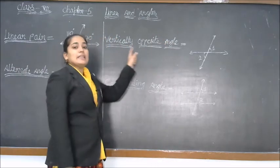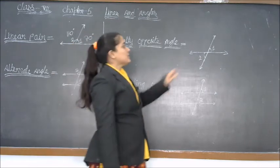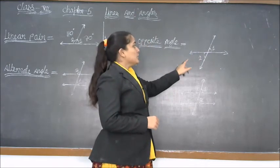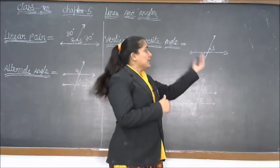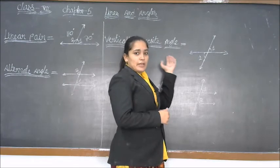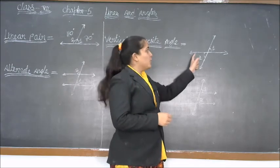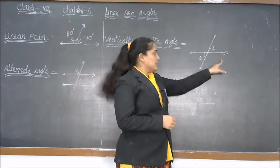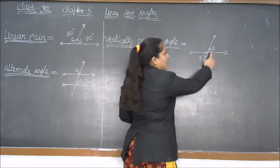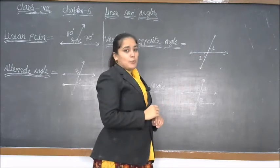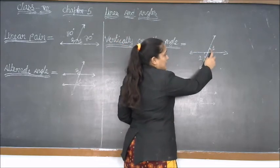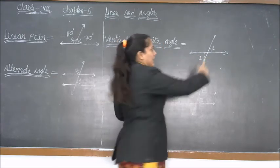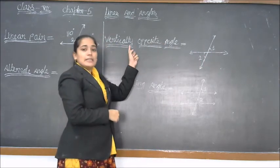Third is vertically opposite angle. In vertically opposite angle, we need two line segments that cut each other. Both line segments intersect — this line segment cuts that line segment. The angle formed upward and the angle formed downward on opposite sides are equal, and this type of angle is known as vertically opposite angle.